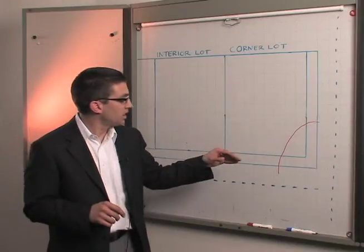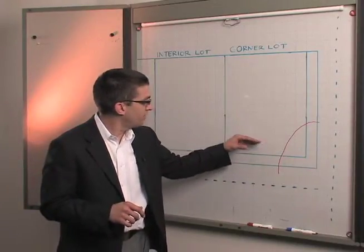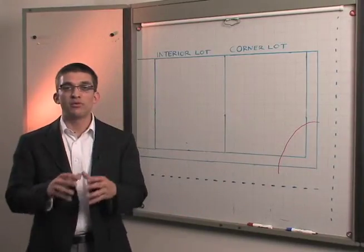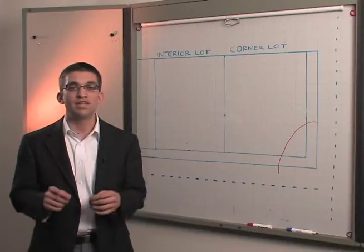The second question that we get is where does my property line actually begin? Depending on the block, your property line actually begins a couple feet in from the back edge of the sidewalk and could range anywhere from 2 to 7 feet in.